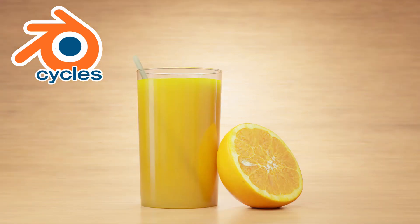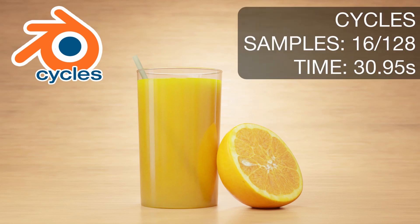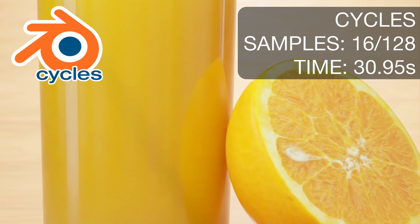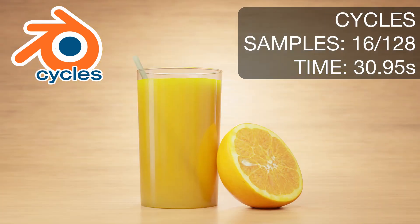Cycles really gave me a nice result. Using an adaptive sample rate with a minimum of 16 and maximum of 128, I got a render time of 30.95 seconds — essentially 31 seconds. The only slightly problematic thing is a little bit of color noise in the juice, which is fairly difficult to see and mostly negligible. If you crop in you can see some RGB noise, but otherwise the occluded areas are really nice, picking up nice ground reflections. The orange surface material is fairly specular — I probably should have backed that off — but overall it came up very nicely.